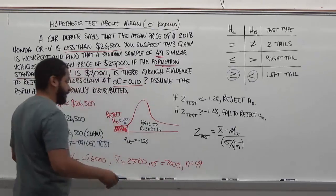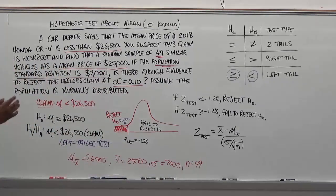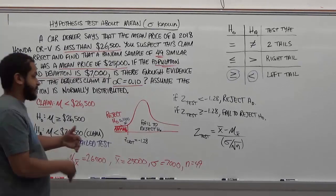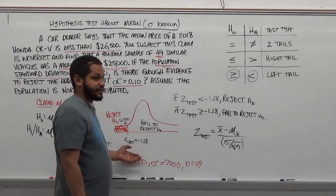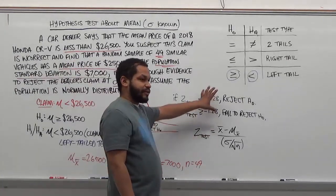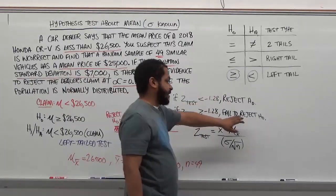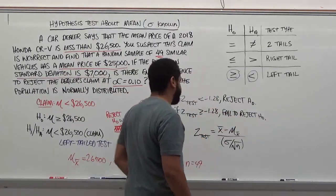Our goal is to plug in all these values, get our z-test statistic, and compare that test statistic to our critical statistic, and make the comparison for failure to reject or the rejection of the null hypothesis.